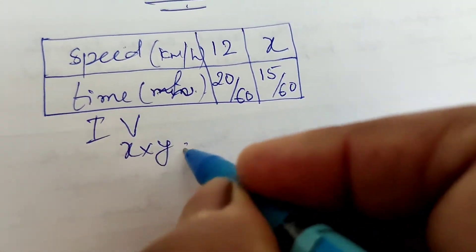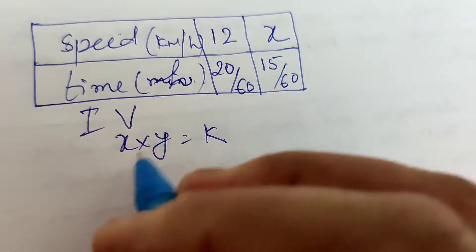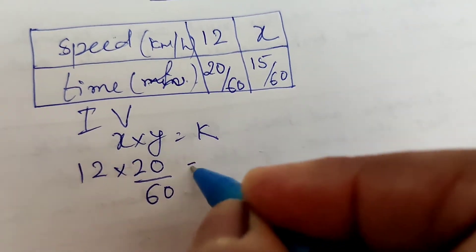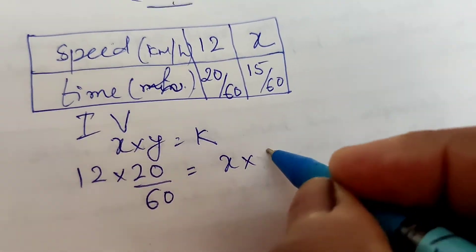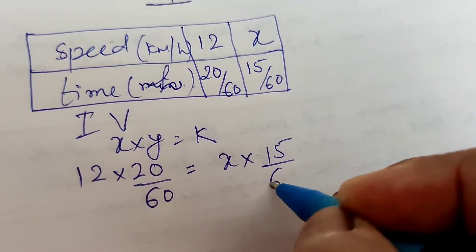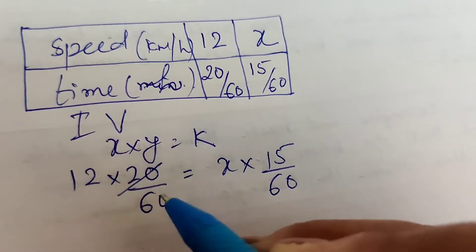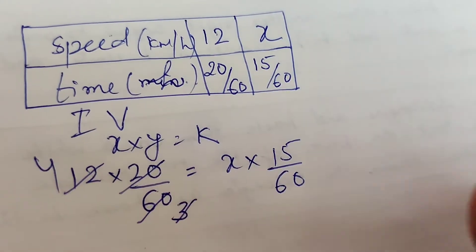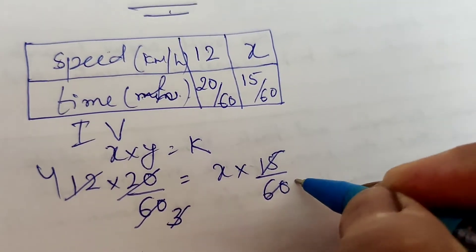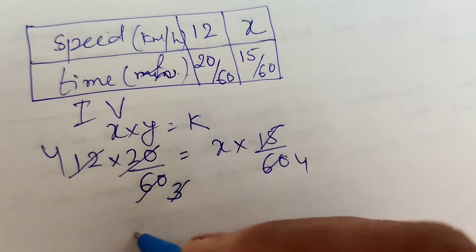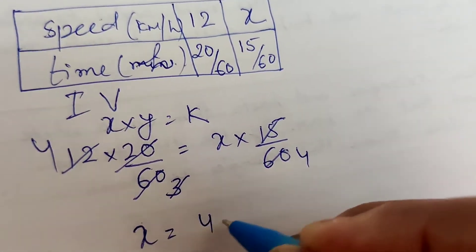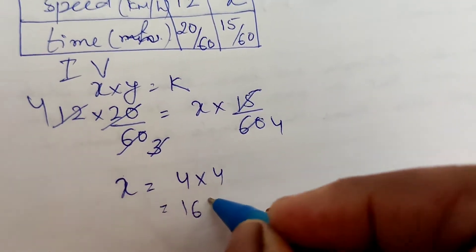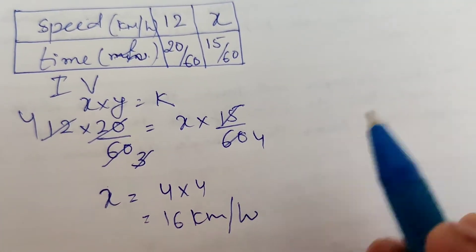Speed and time is an inverse variation. Using the formula x × y = constant: 12 × (20/60) = x × (15/60). Simplifying: 12 × (1/3) = x × (1/4), which gives 4 = x × (1/4), so x = 16 km per hour. Disha's required speed is 16 km per hour.